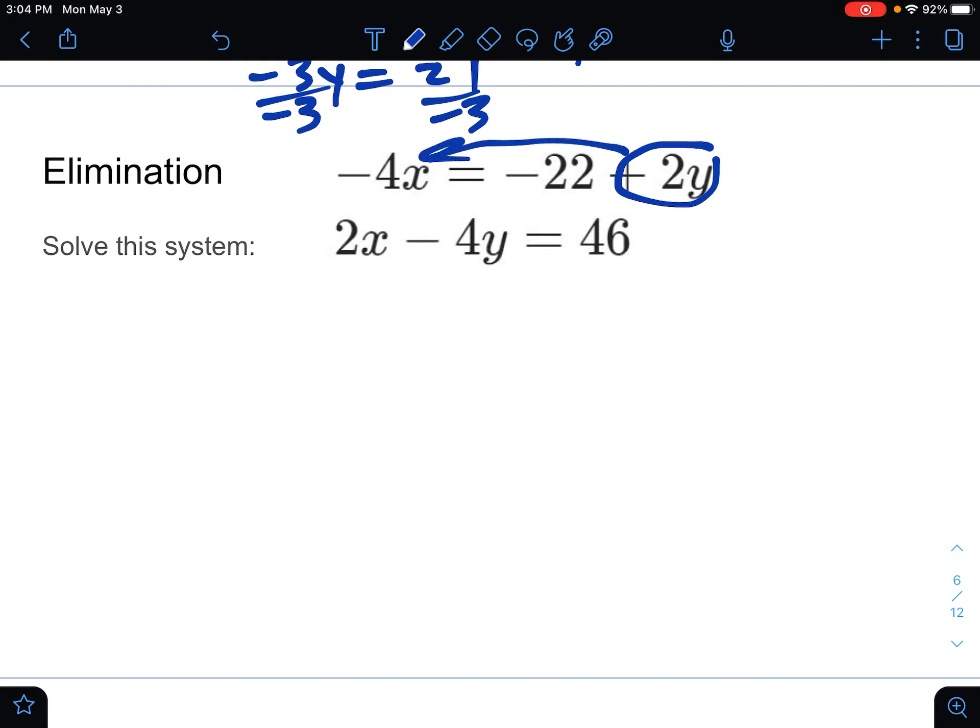So put this off to the side. So negative 4x equals negative 22 plus 2y. If I subtract 2y from both sides, that will help get things lined up. So it'll be negative 4x minus 2y equaling negative 22. Now it's all lined up with what the bottom one looks like. So I'm going to line that up underneath the other equation. And now I'm going to look for opposites. So a bunch of steps here to start this one.